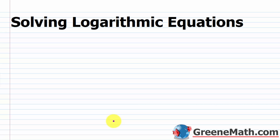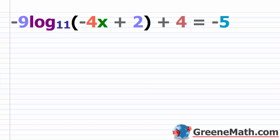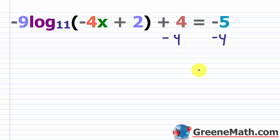In this lesson, we want to talk about solving logarithmic equations. So we're going to start out with an easy example. We have negative 9 times log base 11 of negative 4x plus 2, plus 4, equals negative 5. When you see something like this with just one logarithm involved, you should be thinking about simplifying things and trying to get this into exponential form. That's how you're going to solve this type of equation. So what I'm going to do to kick things off is subtract 4 away from each side of the equation.